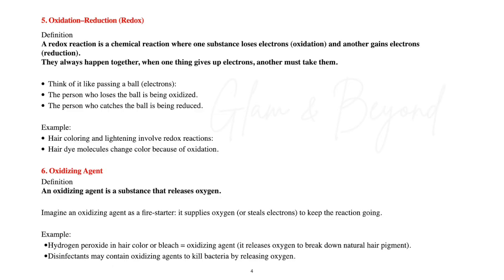Hair coloring and lightening involve redox reactions — hair dye molecules change color because of oxidation. Number six: oxidizing agent. An oxidizing agent is a substance that releases oxygen. Think of it like a fire starter — it supplies oxygen or steals electrons to keep the reaction going. Hydrogen peroxide in hair color or bleach is an oxidizing agent; it releases oxygen to break down natural hair pigment. Disinfectants may also contain oxidizing agents to kill bacteria by releasing oxygen.